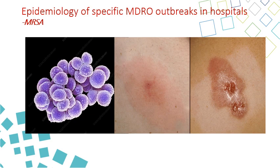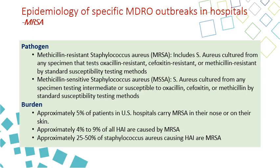We will start with MRSA. As you see in these photos, it is a gram-positive cocci that causes several types of infections, including skin infection and abscesses. You have MRSA and MSSA — MSSA is the opposite of MRSA. So if you have 100 cases of Staph aureus and 30 are MRSA, then by default 70 are MSSA.